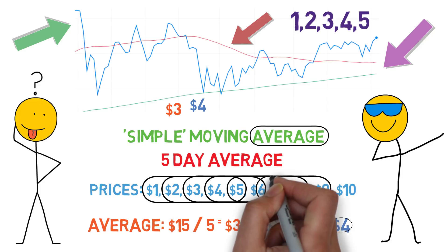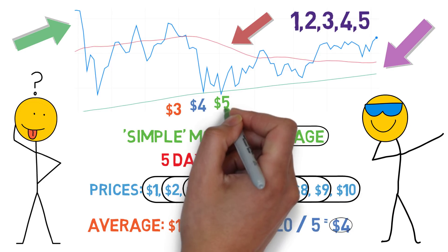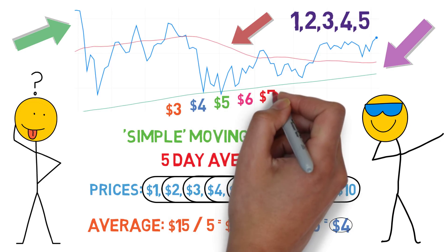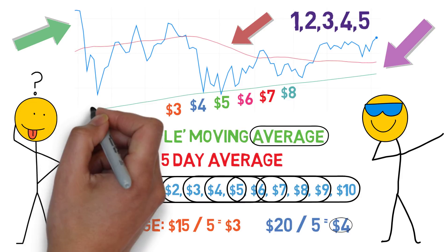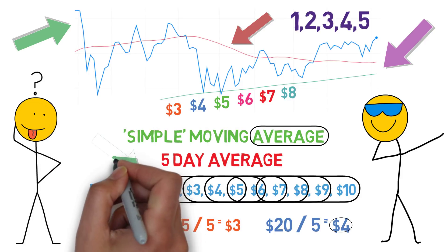Continuing this pattern until the last day with a price of $10, we can see 3, 4, 5, 6, 7, 8. Because it takes 5 days to start the line, this line can only start on the 5th day till the 10th. It's as simple as that.